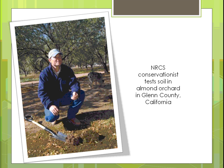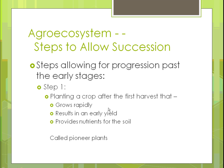Here's an example of a natural resource conservationist coming out to test the soil to find out if it has the nutrients it needs. This is happening out in California — it looks like an orchard, and they have animals in their orchard too.